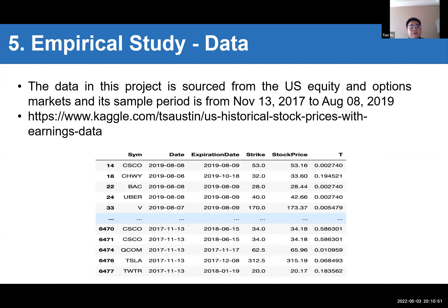And then to do this project, we need the data firstly. The data in this project is sourced from the U.S. equity and option markets and its sample period is from 2017, November 13th to 2019, August 8th. And this URL, I use this URL to collect the data. In this table, we can notice that here are a large number of data. And for each row, we can know which company, the date, the expiration date, the strike price, the stock price at that time, and the time to maturity.